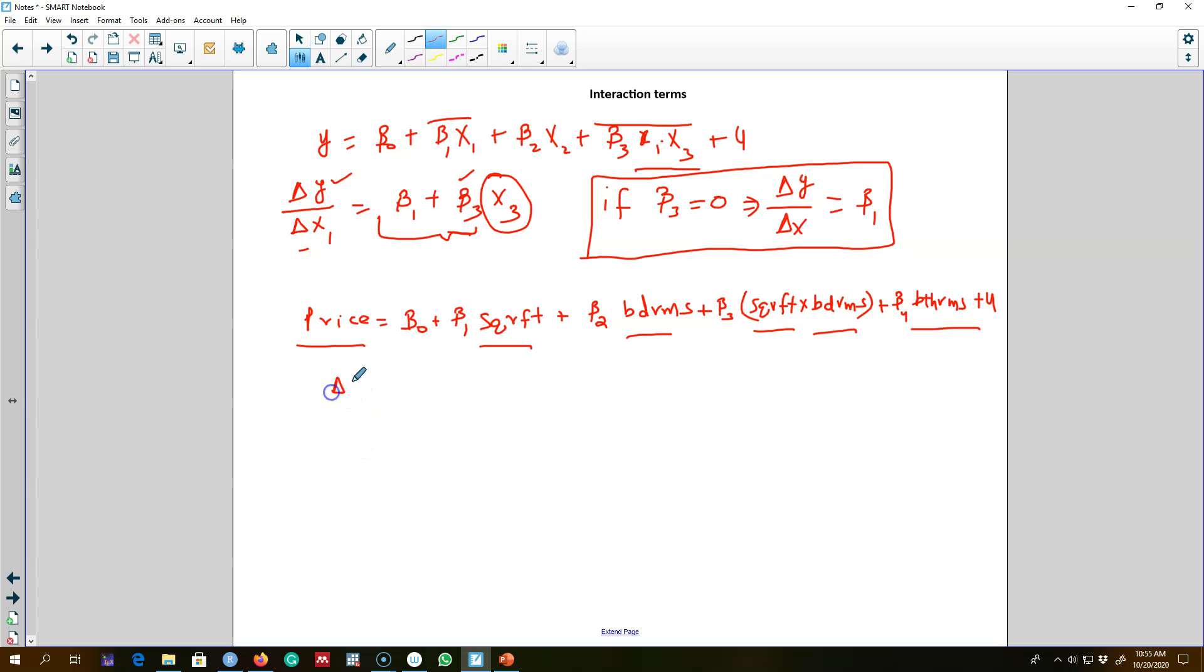In this case, we believe the impact of bedrooms can be represented using this partial effect. If beta 3 is positive, it implies that additional bedrooms increase the price of a house depending on the size of the house.